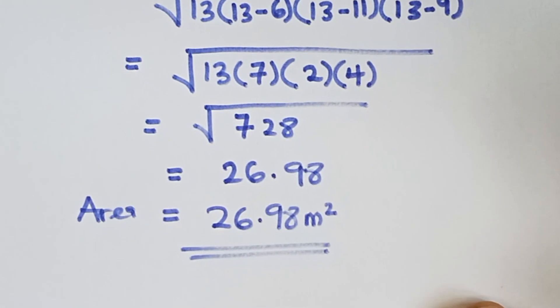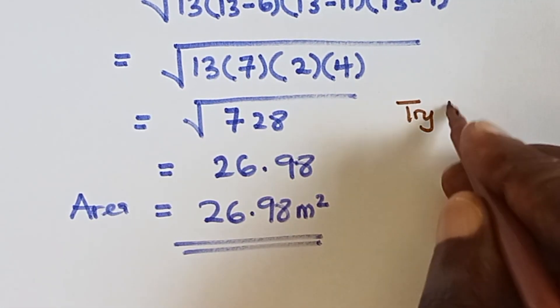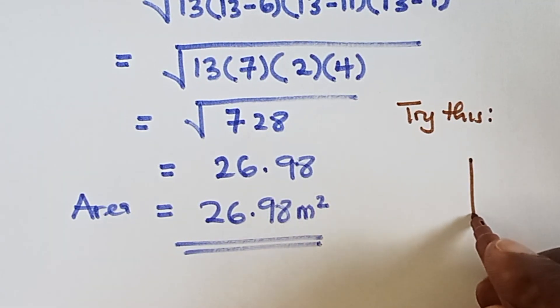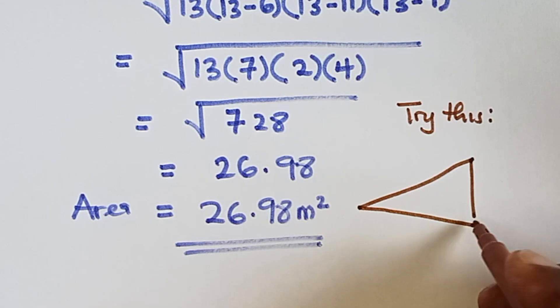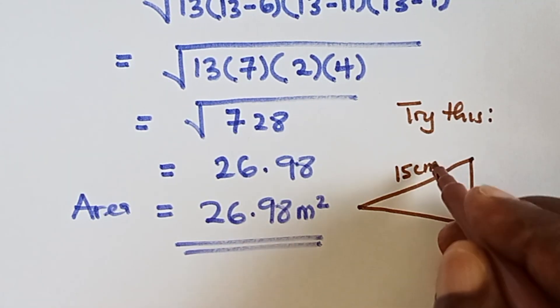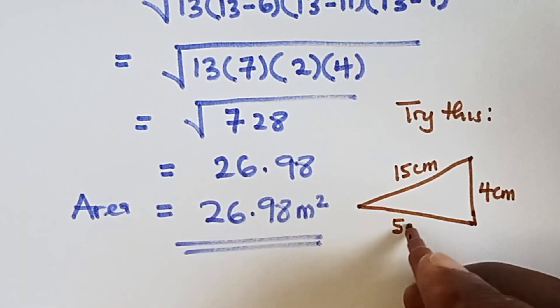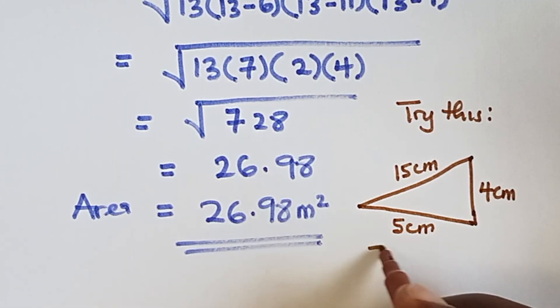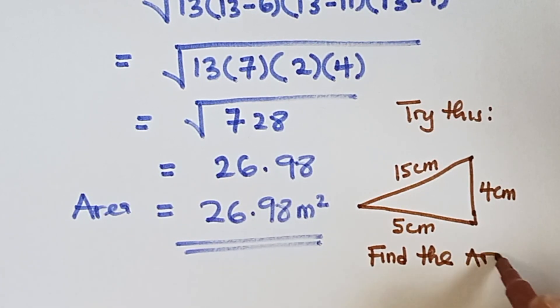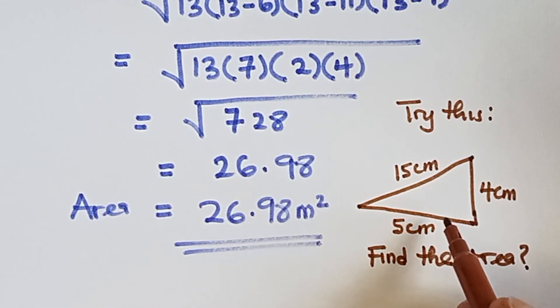All right, so let's do something similar to that. Let's try this. We have a triangle - this is 15 centimeter, we have this place to be 4 centimeter and this place to be 5 centimeter. So the question is we should find the area of this triangle.